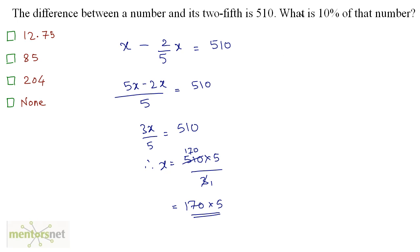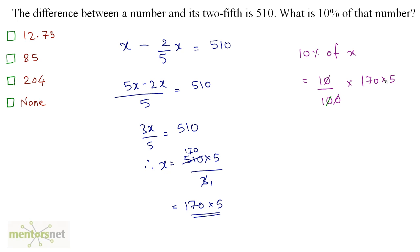What is 10% of this number? We have 10% of x, which equals 10 upon 100 times x. Since x is 170 times 5, we get 10 upon 100 times 170 times 5. The zeros cancel out, giving us 17 times 5, which is 85. So the answer is option B.